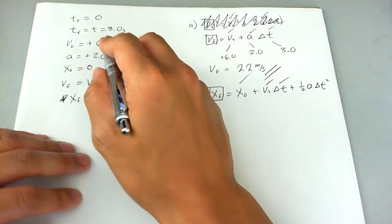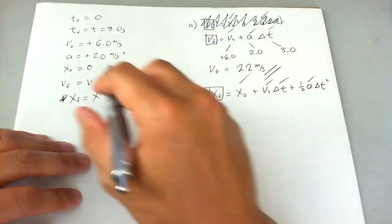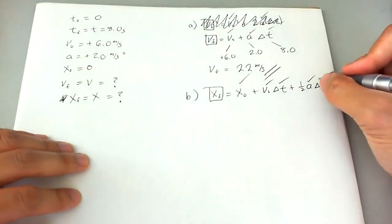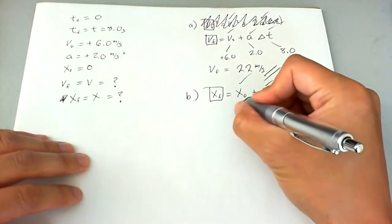We know delta t, it's eight. We know a, it's two. And we know delta t, again, it's eight. We're going to plug it all in here.